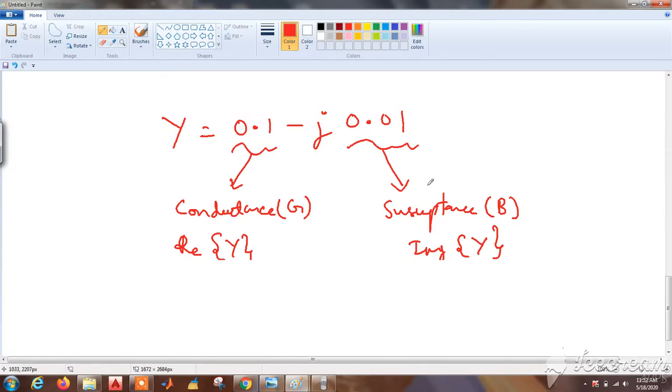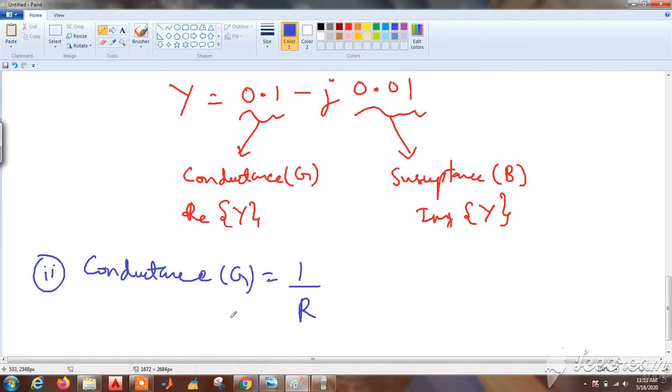In other words, we can say that the conductance G is the inverse of resistance, that is 1 by R. We can get its value directly by applying 1 by R: 10 ohms is given, so 1 by 10 is equal to 0.1 siemens.